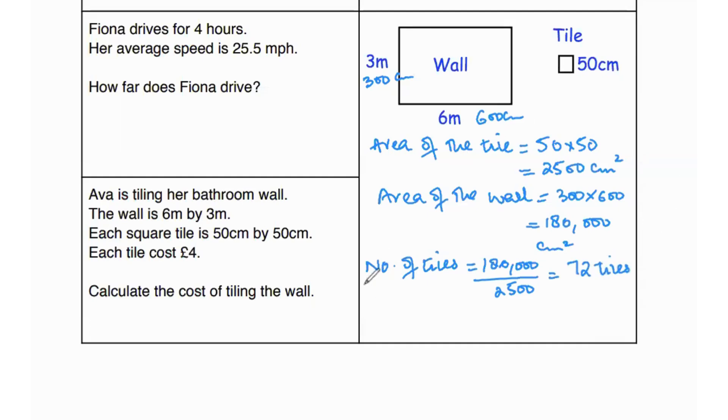So now to find the cost of tiling the wall, cost is going to be 72, which is the number of tiles, multiplied by the cost of one tile, which is 4. So 72 times 4 is 288 pounds, which is the cost of tiling the wall.